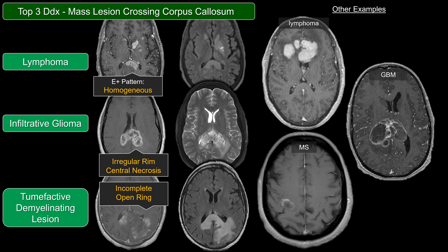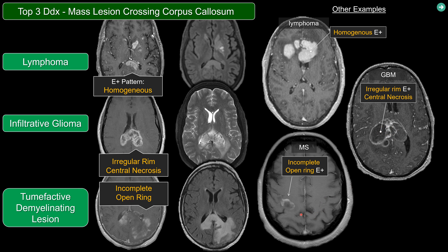Here are some other examples of CNS lymphoma. Notice how large this lesion is — it still presents with homogeneous enhancement without central necrosis. GBM tends to present with this thick, ugly rim enhancement with quite a bit of central necrosis, whereas tumor-effective MS tends to present with this open rim or incomplete rim enhancement, which some people refer to as a horseshoe rim enhancement pattern.